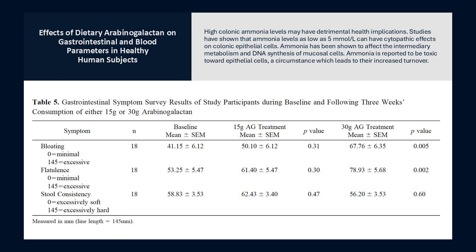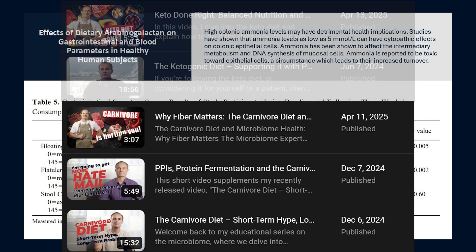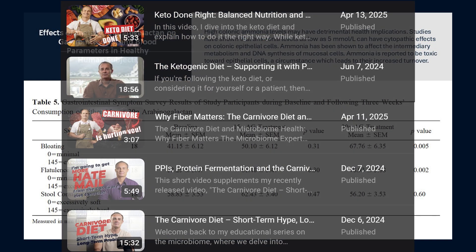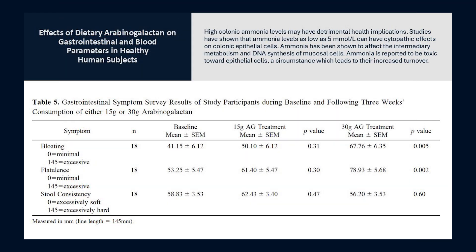My philosophy is different from others: I aim to drive a significant shift quickly in the environment of the microbiome to one which favors the health promoters. Point number two from the paper is about ammonia. Ammonia is toxic to the gut — this smelly toxin comes from bacterial protein fermentation, which you can learn more about in my videos on the carnivore and keto diets. In this study, administration of both 15 and 30 grams of arabinogalactan significantly reduced fecal ammonia levels.